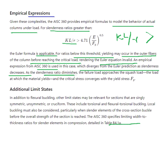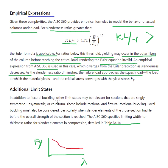As the slenderness ratio diminishes, the failure load approaches the squash load. If the slenderness ratio reduces, the yield value approaches Fy. If the slenderness ratio increases, the failure stress comes down — the critical stress converges with the yield value at low slenderness.